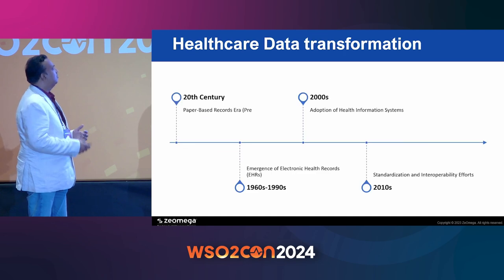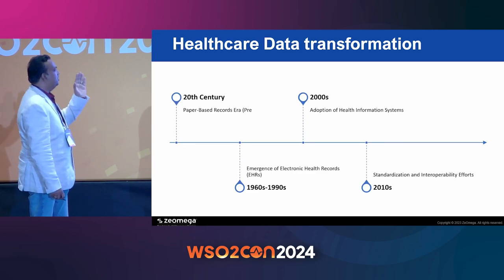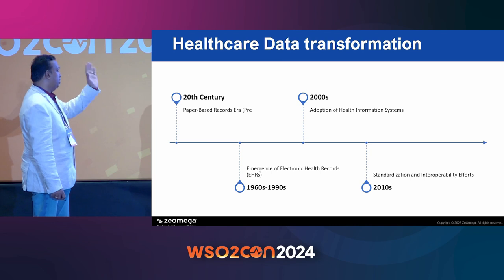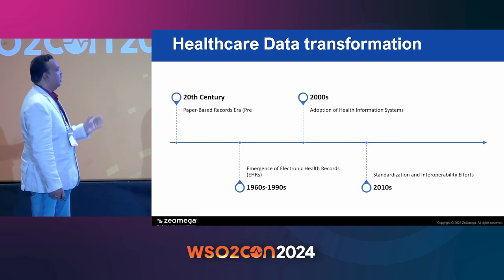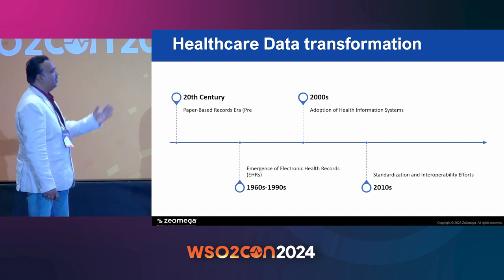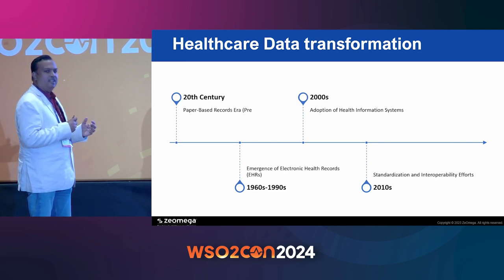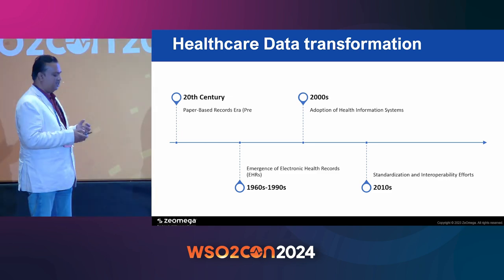The healthcare data transformation started in the 20th century with paper-based records, then moved to electronic. Electronic health records came with adoption of healthcare information systems. Now we are in the interoperability era, using a standard way to standardize data exchange between healthcare systems.